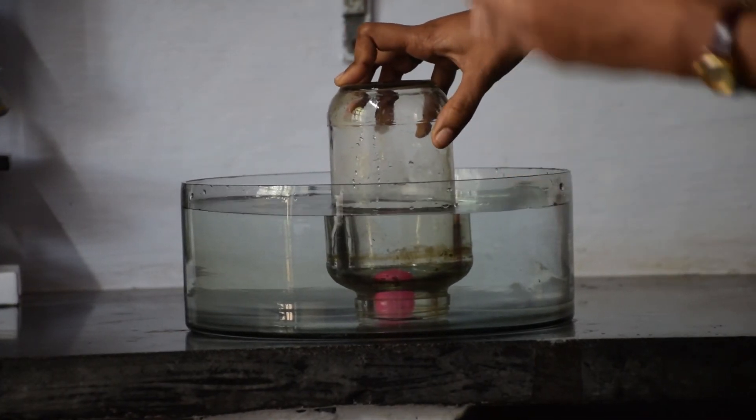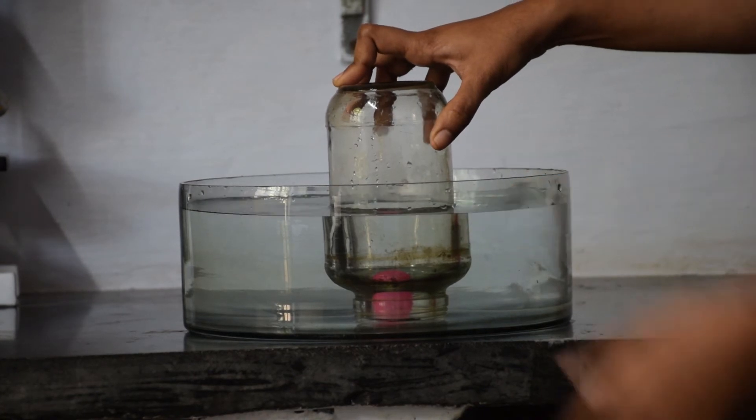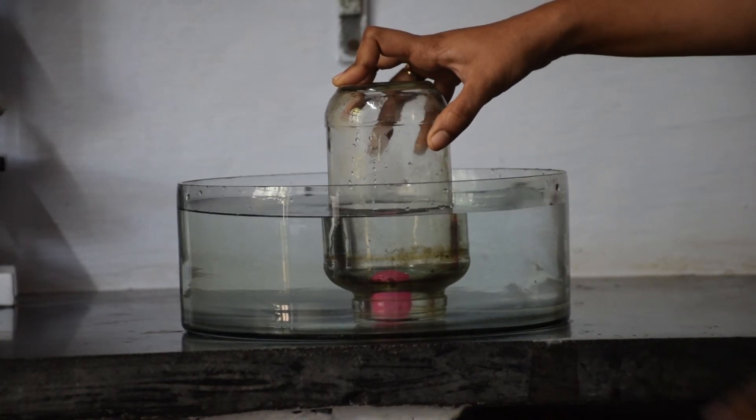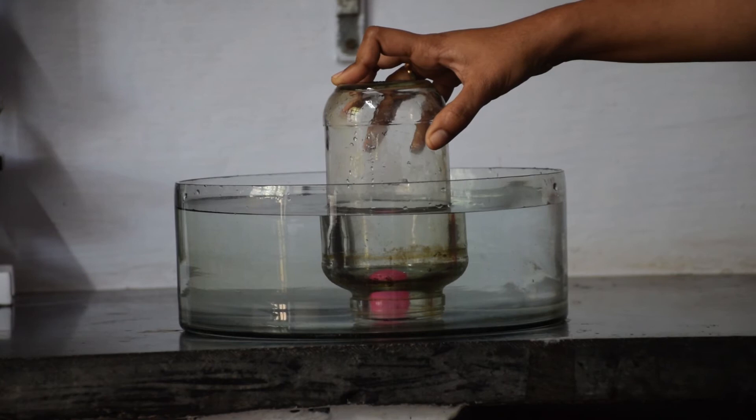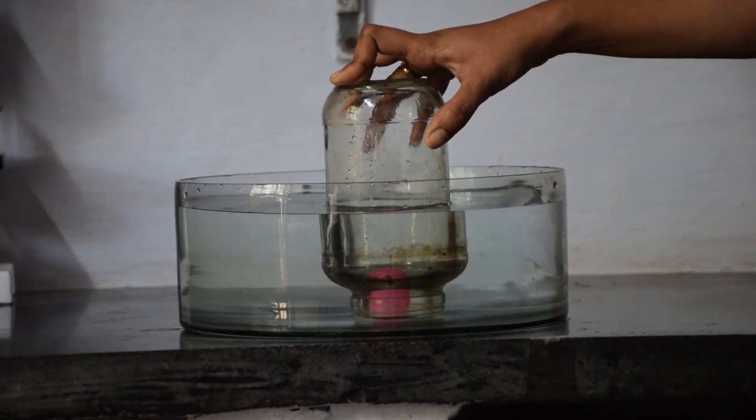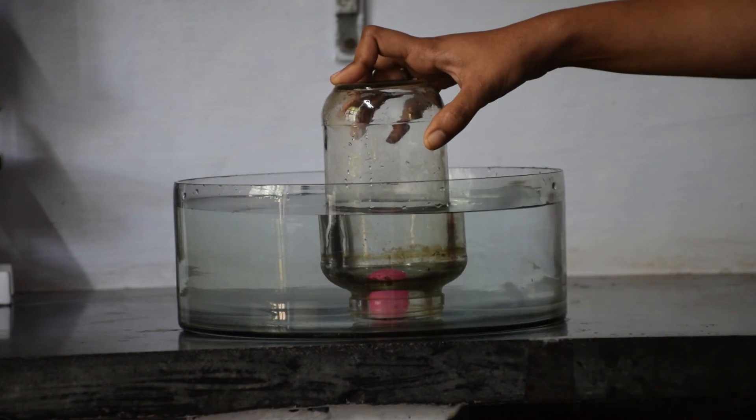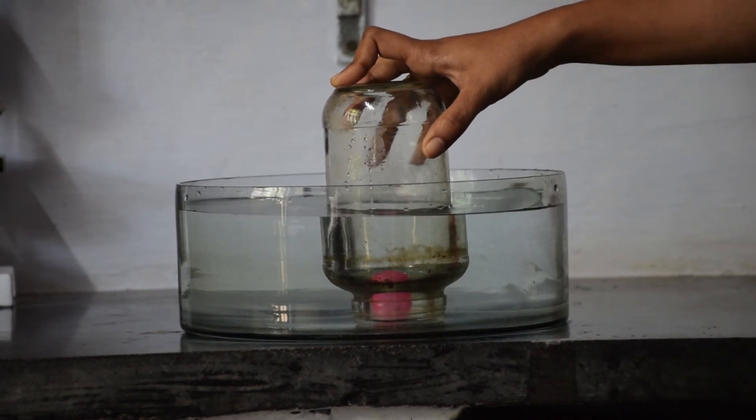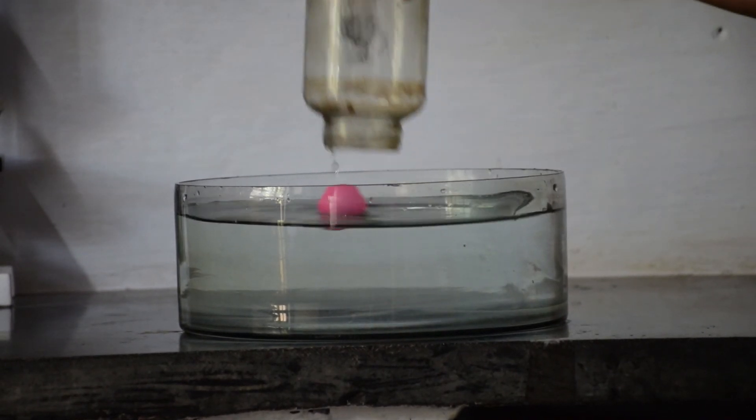Well, what is filled in this bottle? Yes, you guessed right. There is air inside this bottle. This air is pushing the ball down, hence the ball is at the bottom of the vessel. So we can conclude that air exerts pressure.